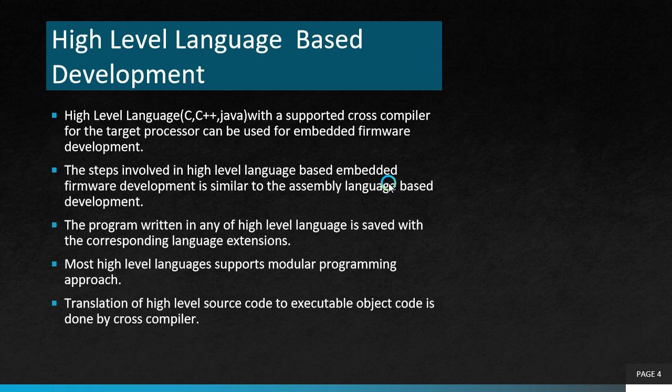What is high level language based development? In assembly language based programming, it is highly time consuming, tedious, and it requires a highly skilled programmer or developer. So we will be using high level language based development. Any high level languages like C, C++, or Java with a supported cross compiler for any specific or target processor can be used for embedded firmware development. Most commonly used high level language is C, since C is a well defined language.